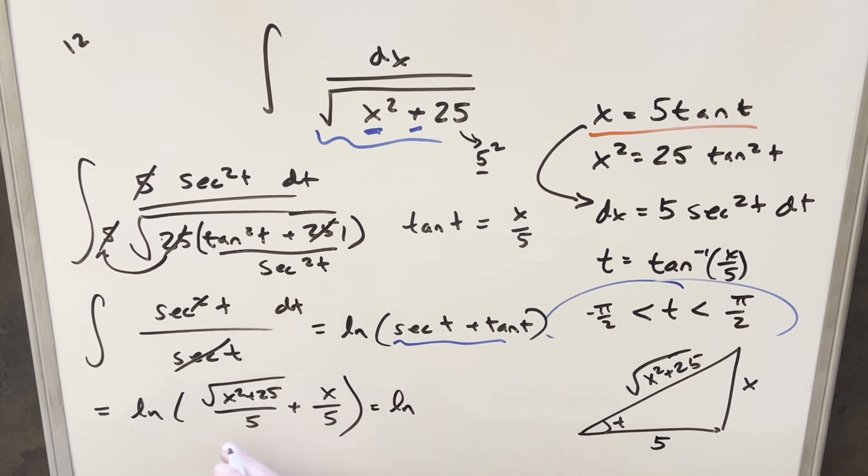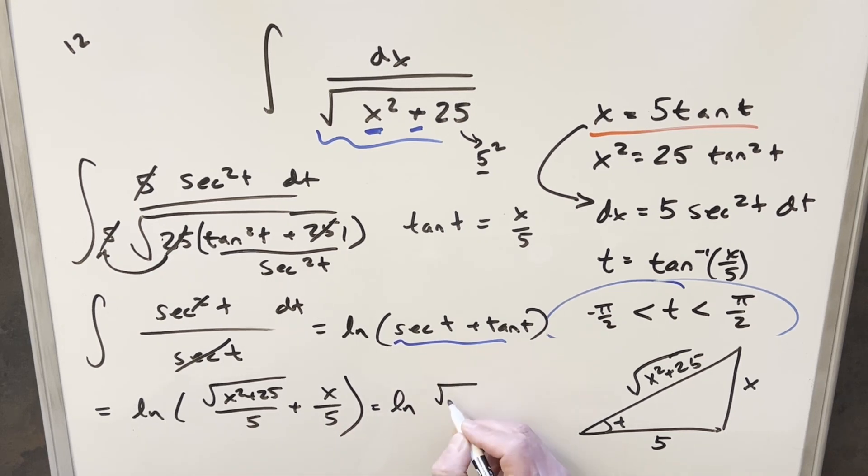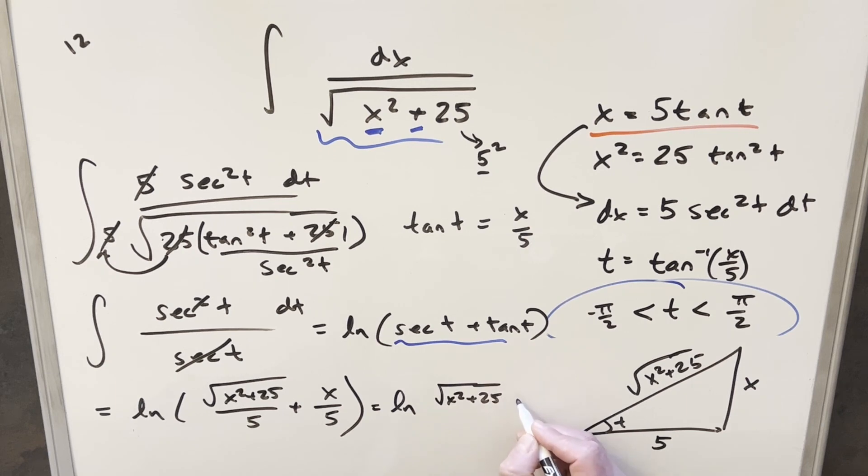But then we'll just rewrite it again. What I can do is we have common denominator already. I can write this as x squared plus 25 plus x. And we write it all over 5.